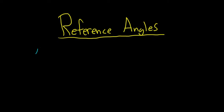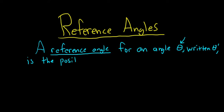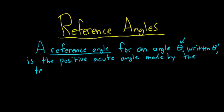In this video we're going to talk about reference angles. A reference angle for an angle theta — let's call it theta prime — is the positive acute angle made by the terminal side of theta and the x-axis.